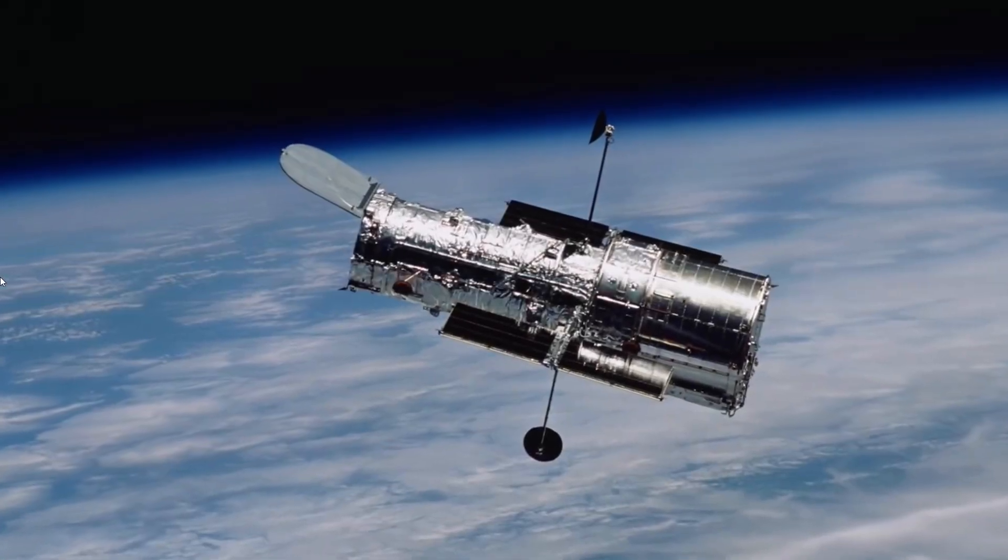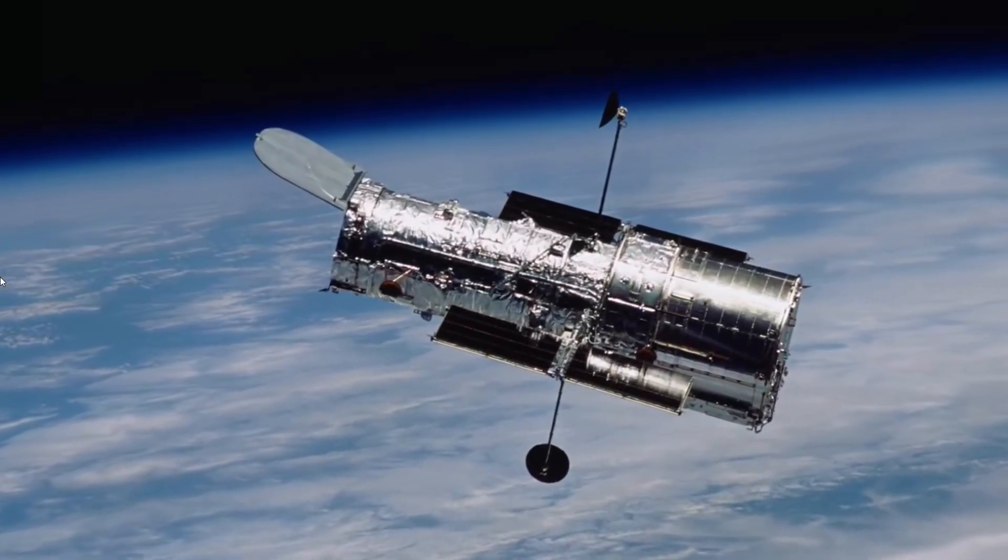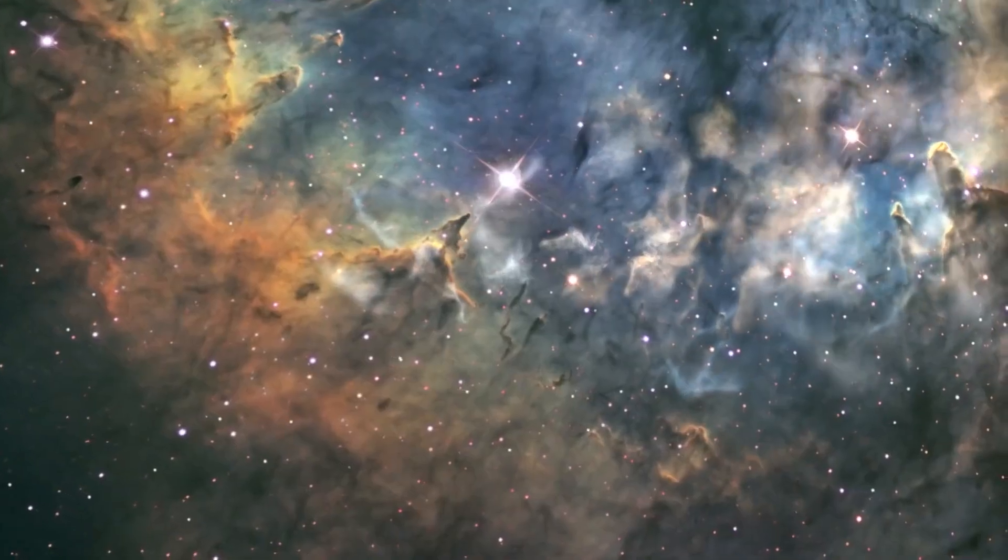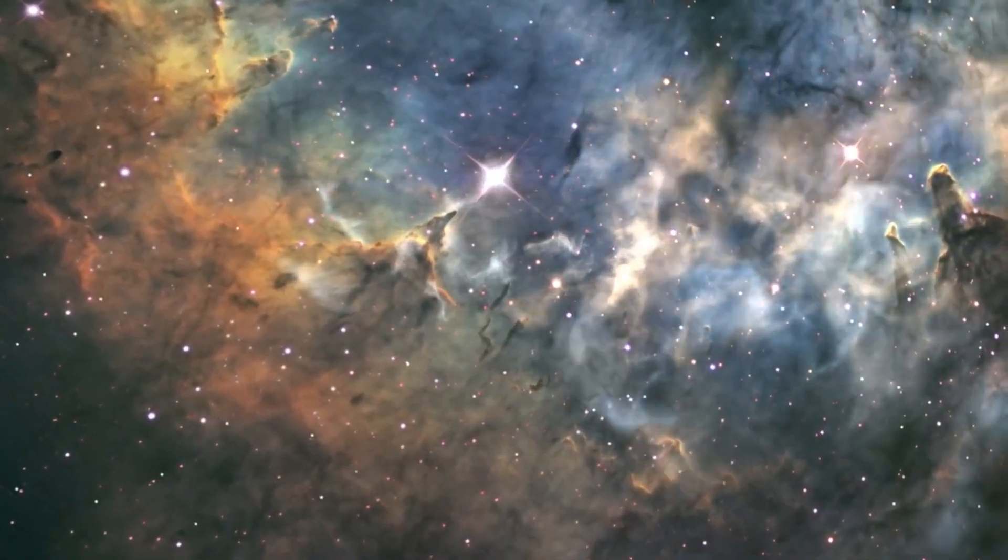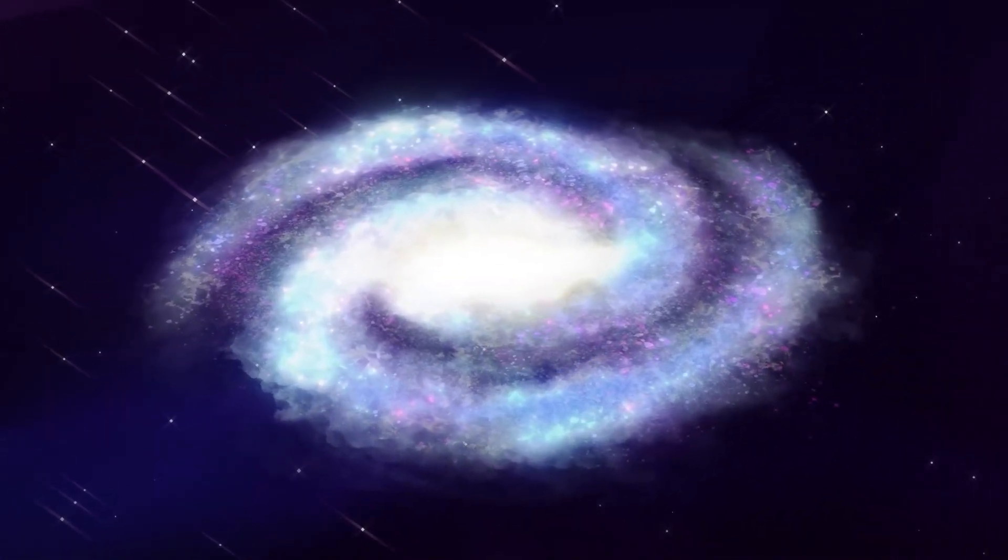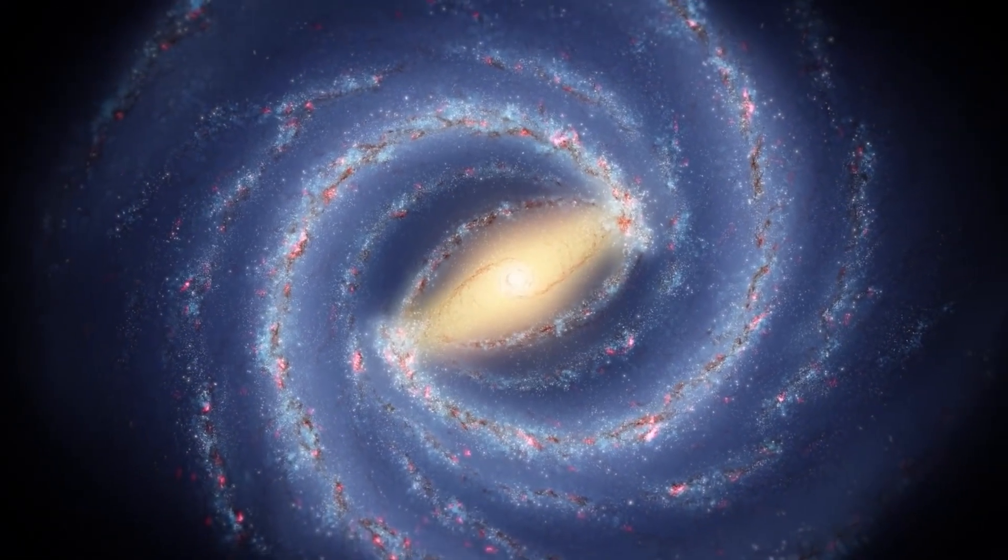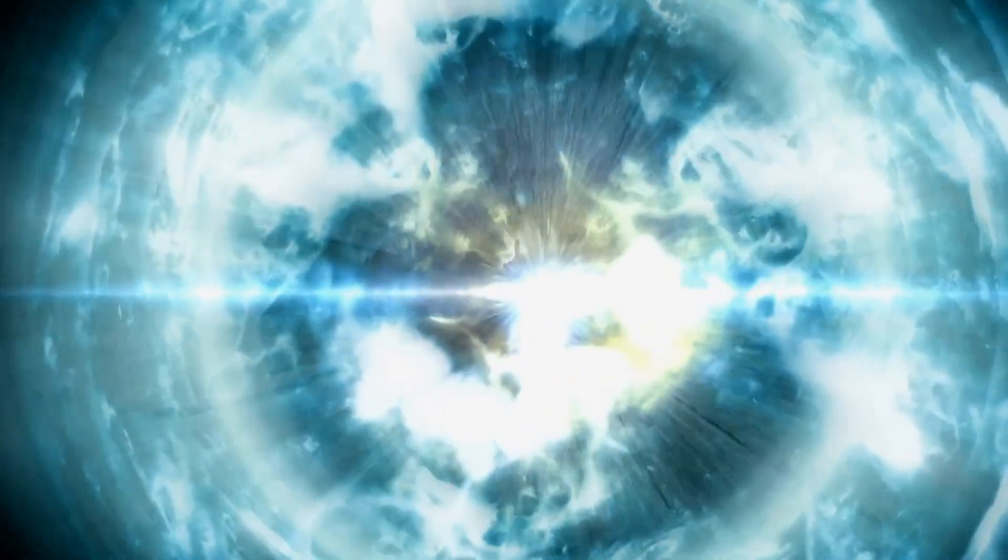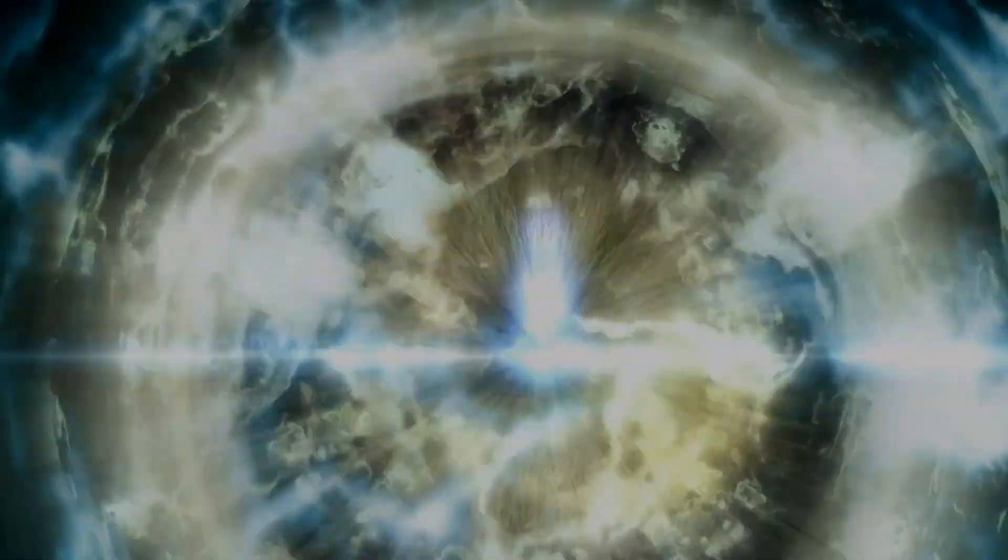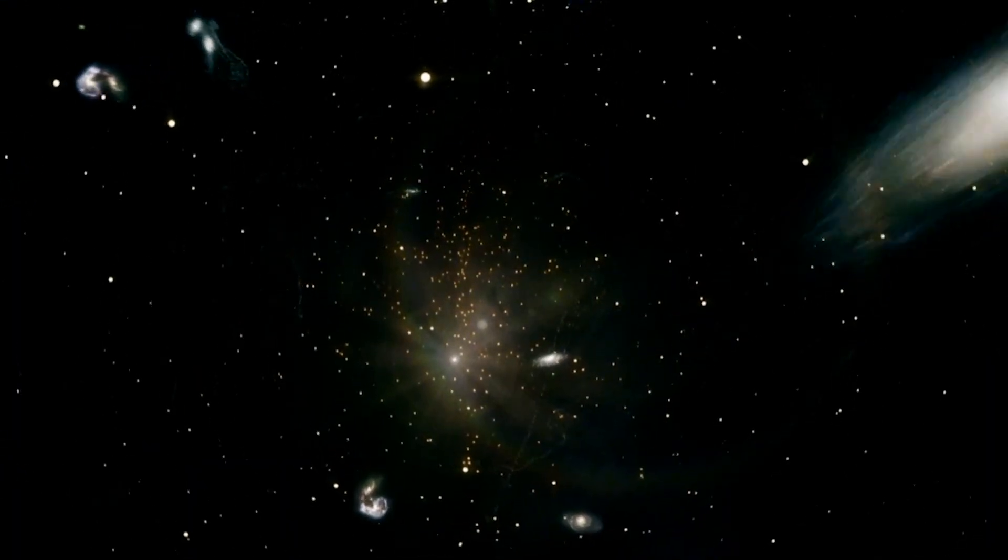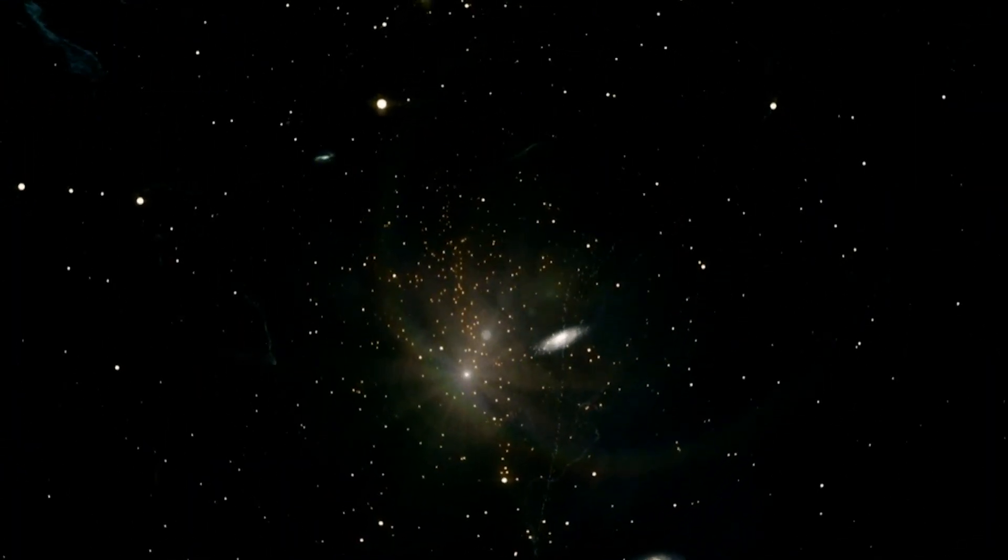But what if Hubble was wrong? What if there is another way to explain his observations? That's what some scientists are wondering. They have a different idea about the nature of the universe. They believe that our universe is just one bubble in an infinite sea of bubbles. And each bubble is created by a process called inflation, which is a fancy way of saying that space blew up really fast right after the Big Bang. But inflation may not happen the same way everywhere. Some bubbles may pop out other bubbles and this process can create new universes with different rules and stuff.